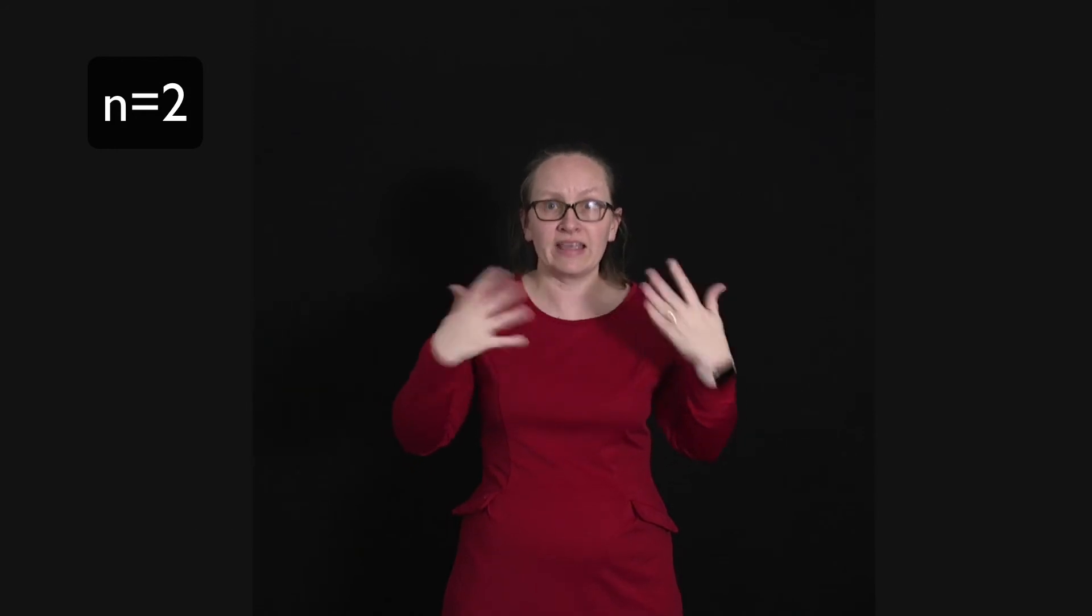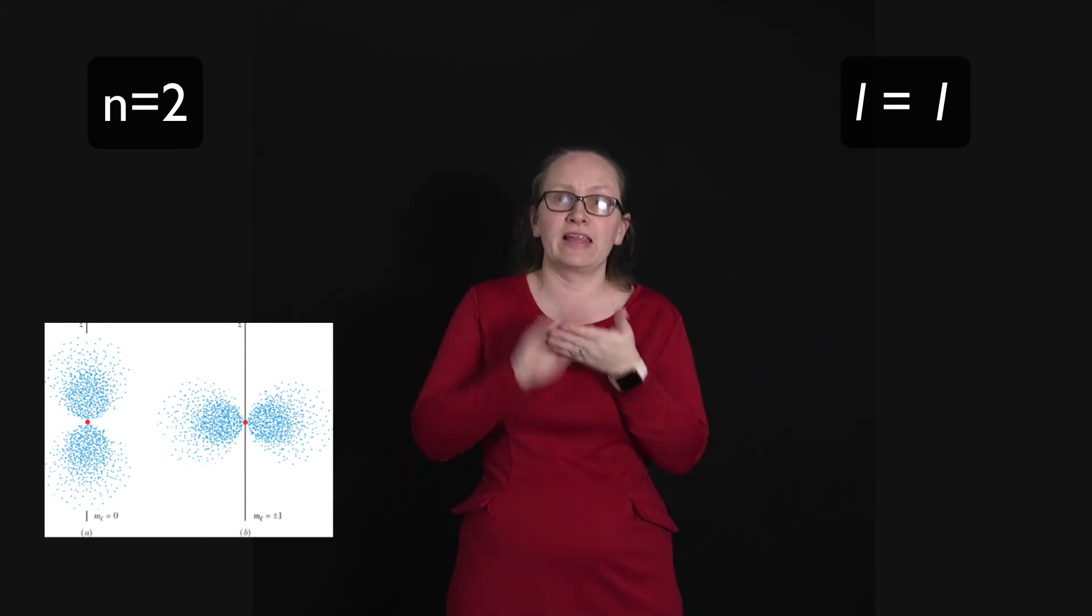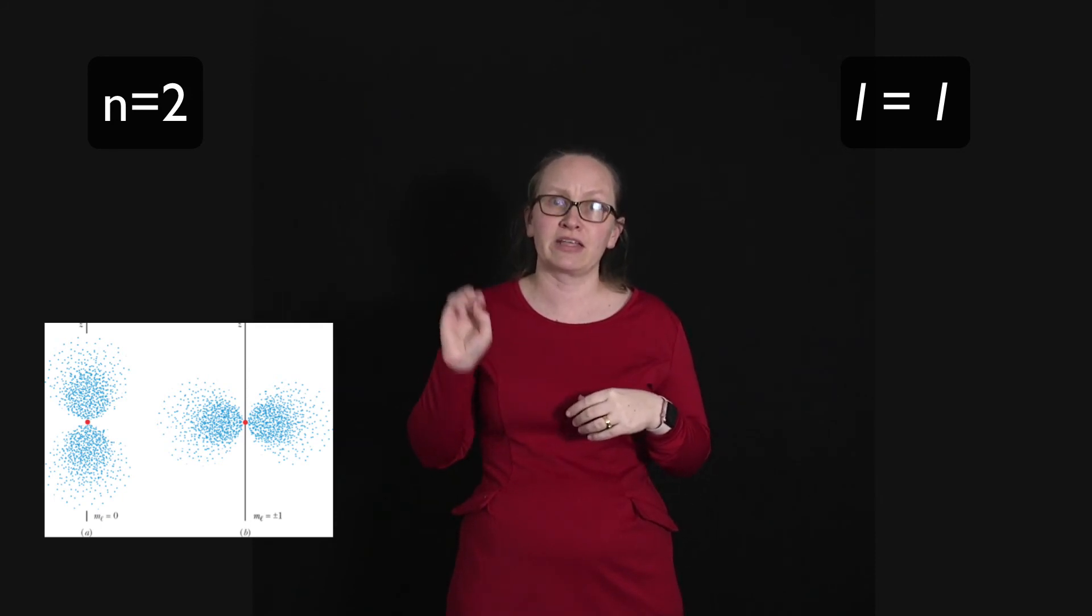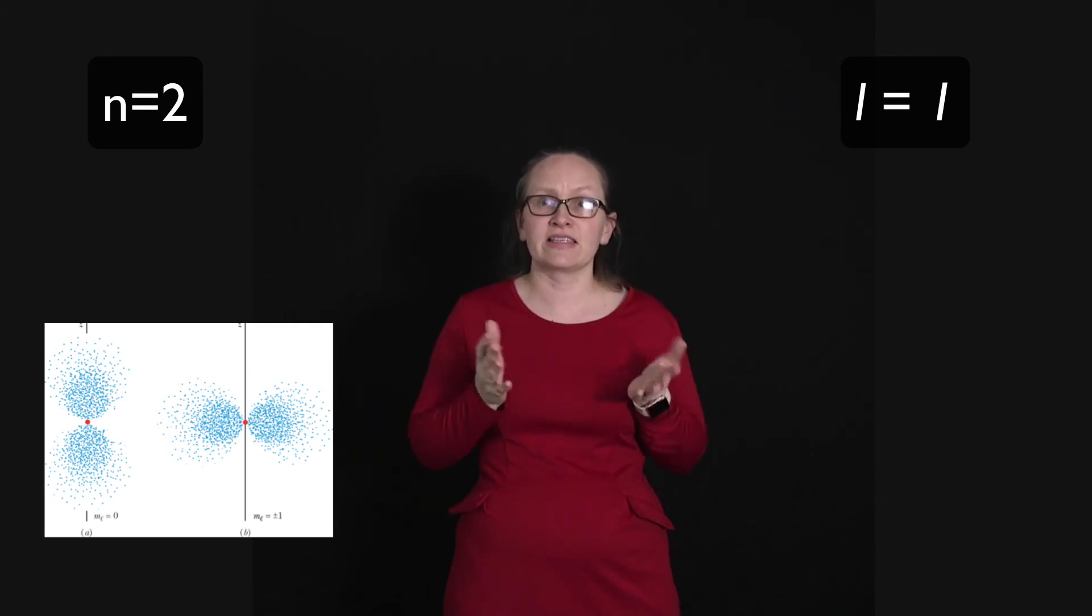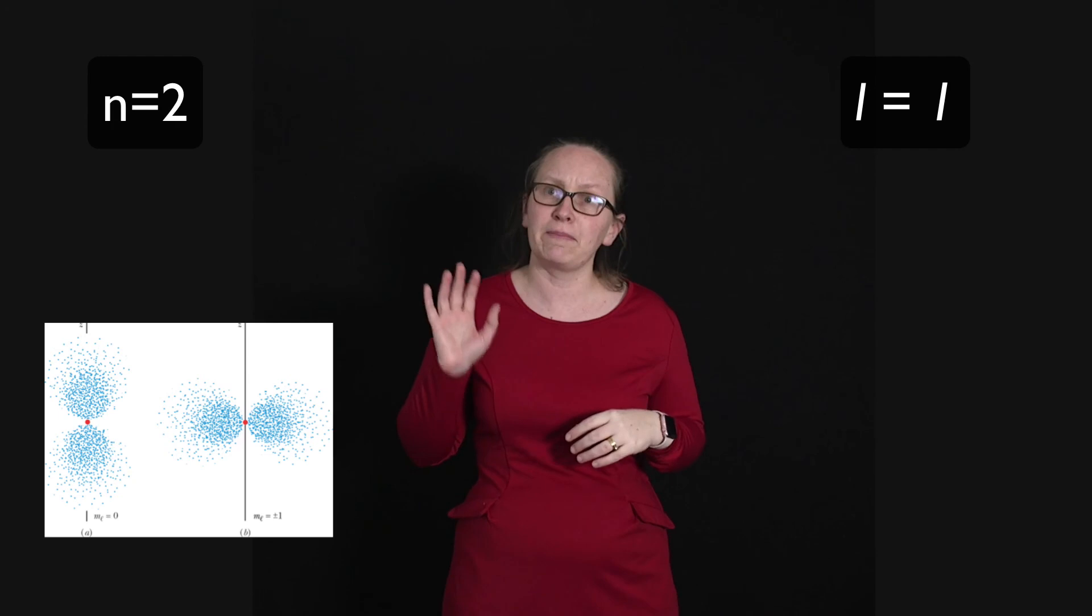So in n equals 2, we can also have the l equals 1 orbital. So in that case, we can have l equals 1, and we can have ml equals 0, or ml equals plus or minus 1. And these are the probability distributions of the electrons that you see in that case. So these are our p orbitals.